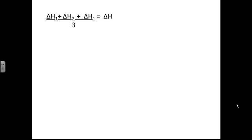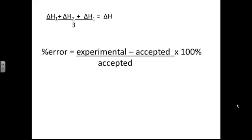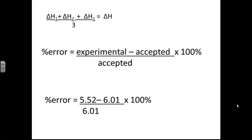We use that average to calculate our percent error. Percent error equals experimental value minus the accepted value, divided by the accepted value, times 100%. For my calculations, my experimental value was 5.52 kilojoules per mole. The accepted value was 6.01 kilojoules per mole. We subtract those, divide by the accepted value, times 100%, and we get negative 8.2%. It's negative because my experimental value was less than the accepted value.